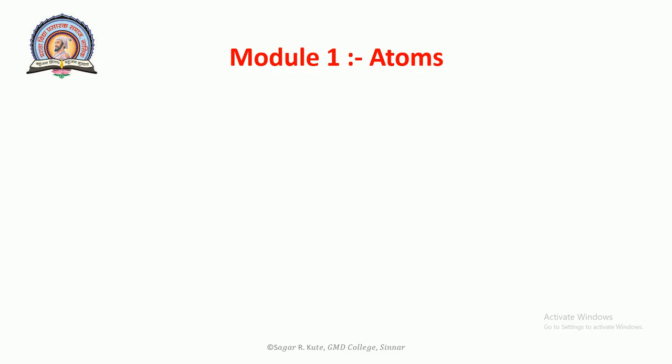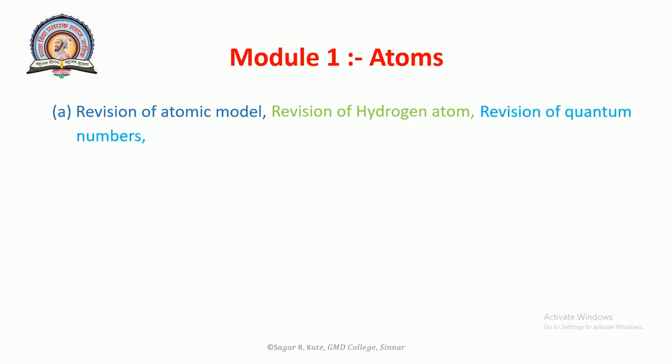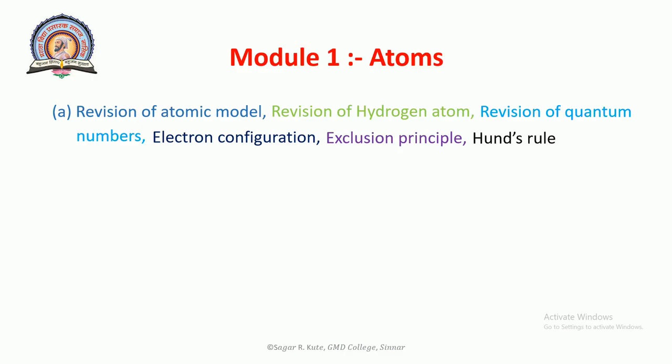Now in the first module, Atoms, the first topic is Revision of the Atomic Model. Second is Revision of the Hydrogen Atom. Third is Revision of Quantum Numbers. Fourth is Electronic Configuration, and the last is Pauli's Exclusion Principle and Hund's Rule. The second topic is the Origin of Spectral Lines.